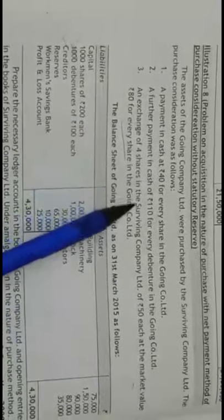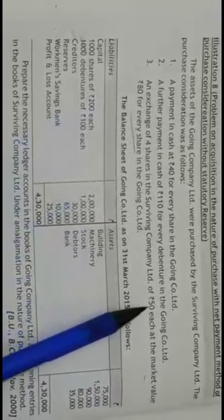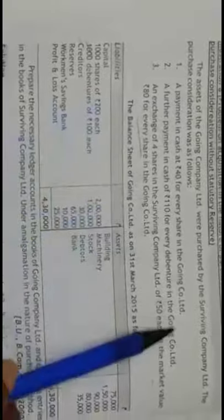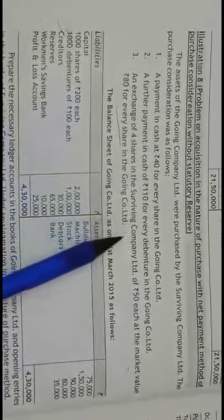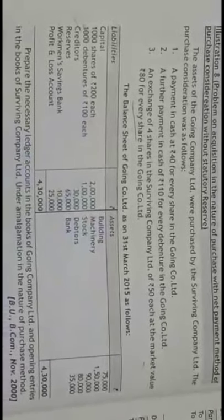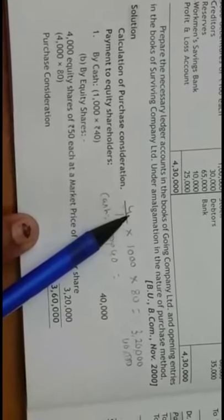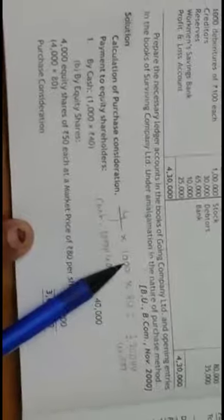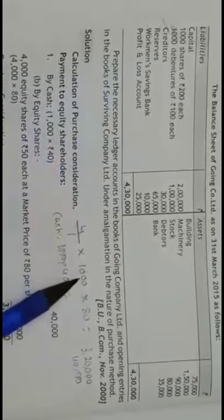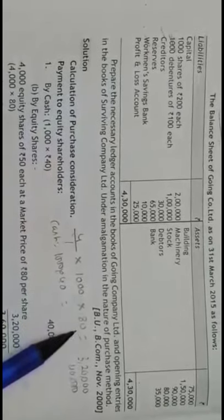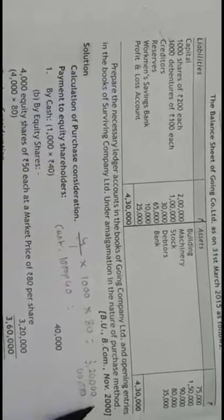An exchange of 4 shares in Surviving Company Limited of Rs.50 each at a market value of Rs.80 for every share in Going Company Limited. So face value is Rs.50, market value is Rs.80, meaning the premium is Rs.30. For every one share, 4 shares of the transferee company are issued. There are 1,000 shares, so 4 × 1,000 × Rs.80 gives Rs.3,20,000 paid in the form of equity shares.